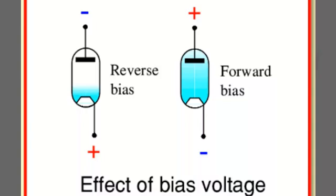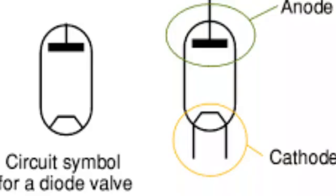Tube devices consist of a vacuum tube or inert gas tube, along with an anode and cathode. We can see here this is the diode valve. Anode and cathode plates are placed in a quartz tube, also known as a diode valve. It can work as a diode, so it is also known as a diode valve.